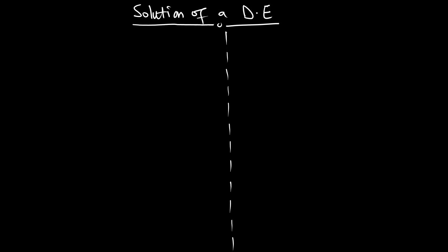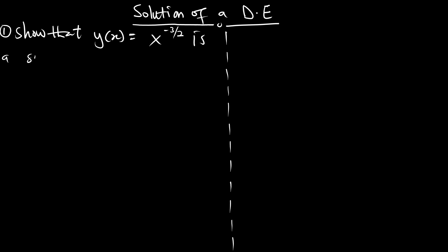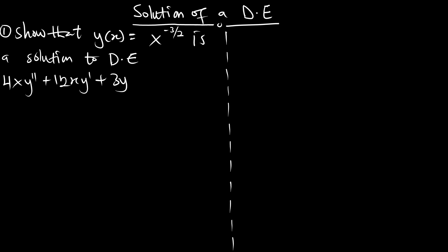Welcome to the second episode of solution of a differential equation. Example 1: let's show that the expression y(x) = x^(-3/2) is a solution to the differential equation 4x·y'' + 2x·y' + 3y = 0.